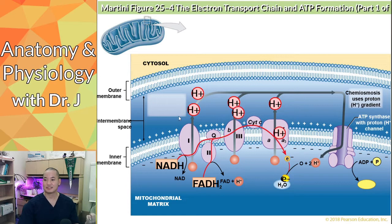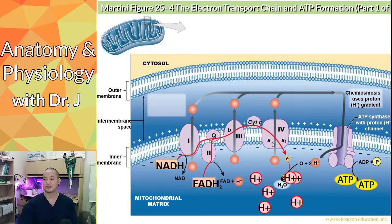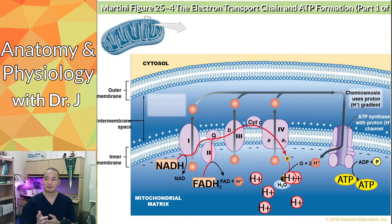As more protons build up in the intermembrane space, if you open up a channel, they're going to spill out toward the area with fewer protons — back into the matrix. The cool thing is that as these protons spill out through the proton channel, they use that energy to drive the synthesis of ATP. This is similar to a hydroelectric dam, turbine, or water wheel — the movement of water generates energy and converts it to electricity. Something similar happens with ATP synthase.